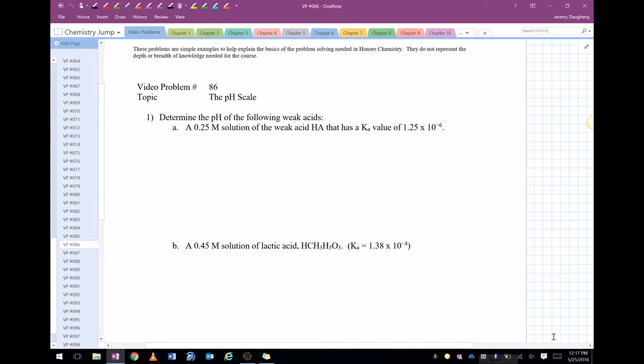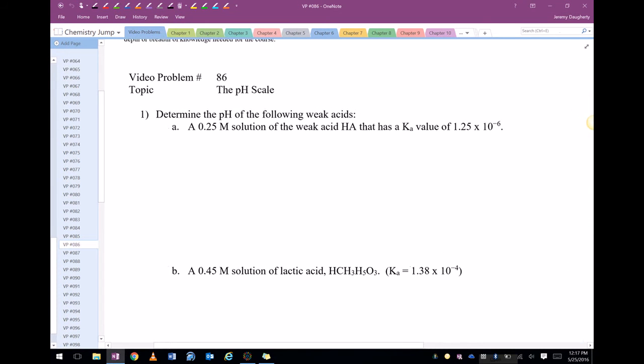Video problem 86, sticking with the pH scale. Determine the pH of the following weak acids. A 0.25 molar solution of the weak acid HA that has a Ka value of 1.25 times 10 to the negative 6. Alright, so this is HA and it's a weak acid.